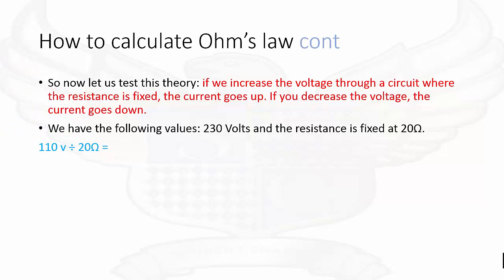110 volts divided by 20 ohms will help us work out the current, which is 5.5 amps. Now we have 230 volts divided by 20 ohms, which equals 11.5 amps.